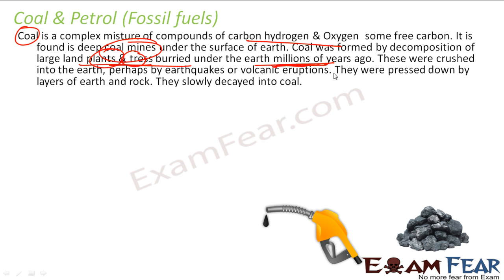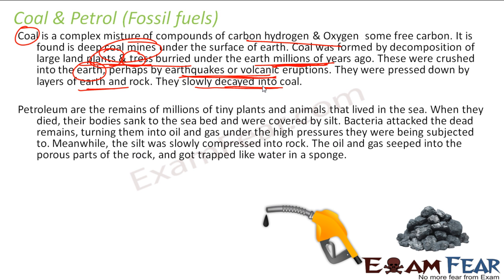There were some plants, trees and animals — they all got buried millions of years ago and they formed coal because they were crushed into the earth, perhaps by earthquake or volcano. We don't know; there are still a lot of theories. Nobody knows the exact answer, but something happened, it got buried, pressed down by the earth and rock, and with enough pressure they slowly decayed into coal.